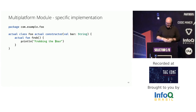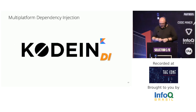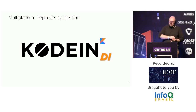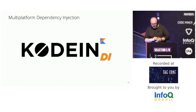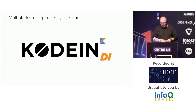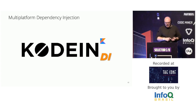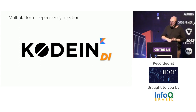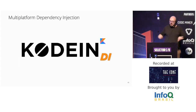When implementing multi-platform projects, we are not limited only to the Kotlin standard library. Some other projects have recently added multi-platform support. Kodein is a library for dependency injection containers in your project, and it also added functionality like a multi-platform JSON parser, an HTTP client, and even a NoSQL database implementation — all usable in multi-platform projects.